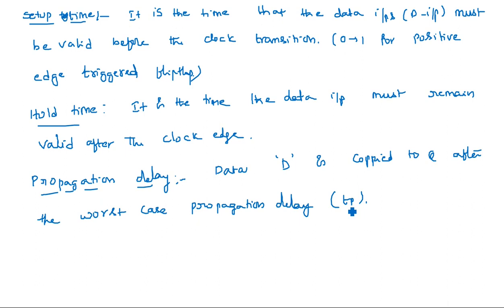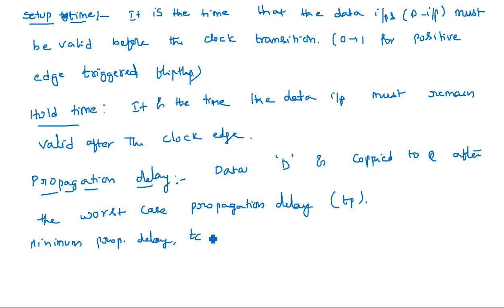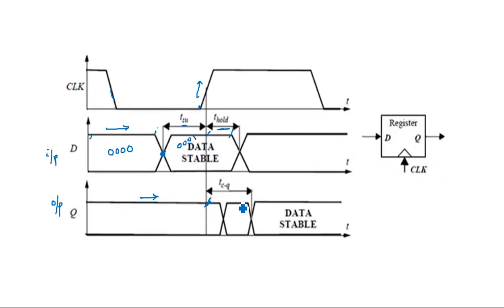The minimum propagation delay is indicated by t_cd. The total clock period T is equal to t_cq plus t_p (propagation delay) plus t_setup. Here t_cq is the time from the clock edge to when Q becomes valid, as shown in the figure. Additionally, t_cd(register) plus t_cd(logic) must be greater than or equal to t_hold.